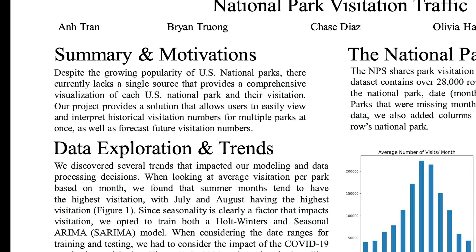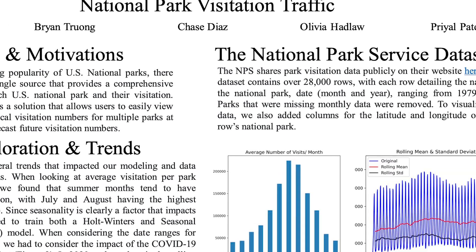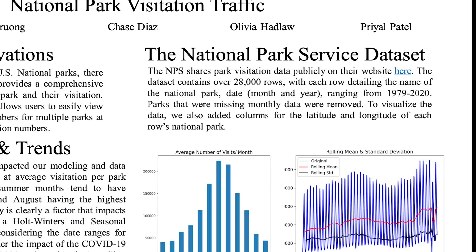Our project seeks to use data to visualize historical visitation and forecast future visitation. We worked from a dataset downloaded from the NPS website. The data is temporal, containing over 28,000 rows across 63 national parks. Each row contains the national park, month, year, and number of visits recorded for that month. The data ranges from January 1979 to December 2021.